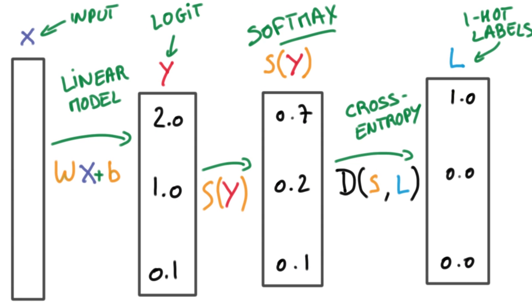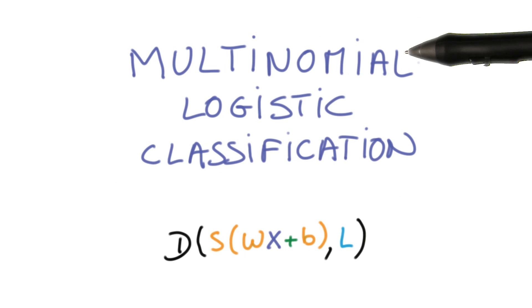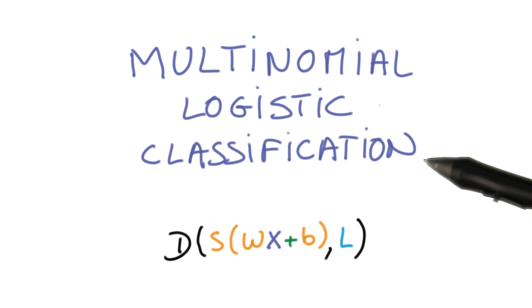So let's recap, because we have a lot of pieces already. We have an input that's going to be turned into logits using a linear model, which is basically a matrix multiply and a bias. We're then going to feed the logits, which are scores, into a softmax to turn them into probabilities. And then we're going to compare those probabilities to the one-hot encoded labels using the cross entropy function. This entire setting is often called multinomial logistic classification.